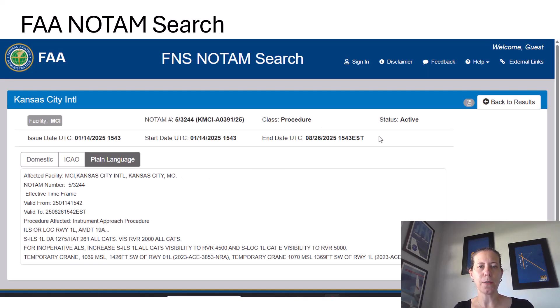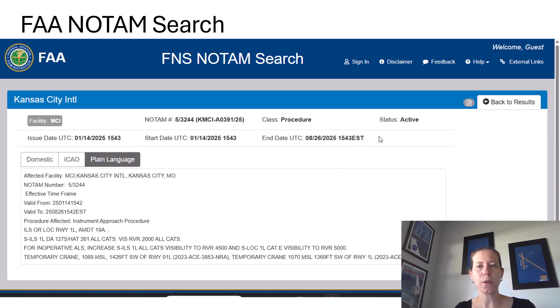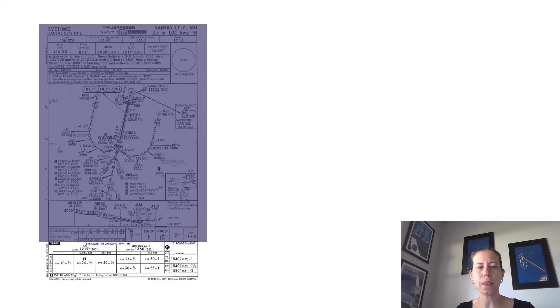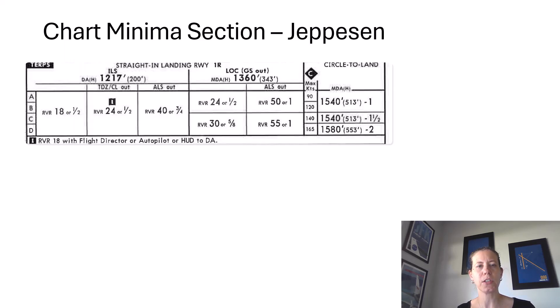You can go to the FAA NOTAM search — I'll link to it in the video description. I pulled out some NOTAMs for Kansas City International Airport and we are going to be looking at a related Jeppesen chart: the ILS or localizer to Runway 1 Right at Kansas City, specifically the minimum section.